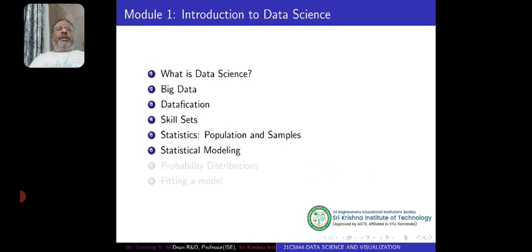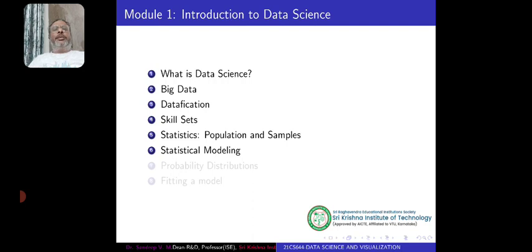After having an initial idea about statistics, we get into building the statistical model which fits our data. Whatever data we have, if we can give it a mathematical structure, then instead of millions of data points, we can put that in one mathematical expression or some parameters, so that similar data can be reproduced for further use. That is where the statistical model comes to our aid.